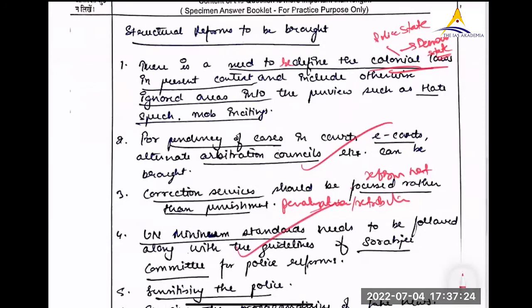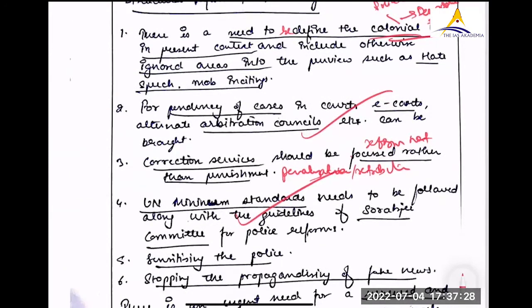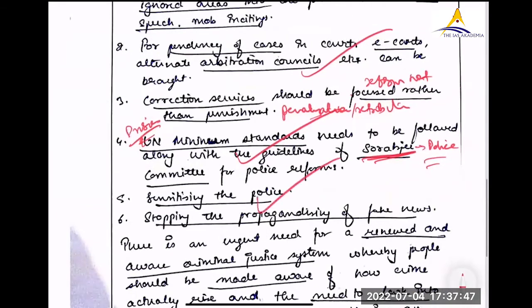And why do you need to redefine colonial laws? They were establishing a police state. We are a democratic state. We are not a police state. For pendency of cases fine. Correctional services should be focused. Should be on reform. Not penalization alone. Or basically you are saying not retribution but reform. UN minimum standards. Soli Jais. So Sourabji committee for police reform.